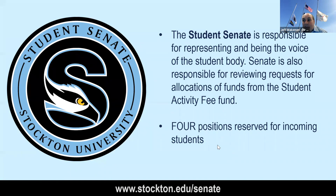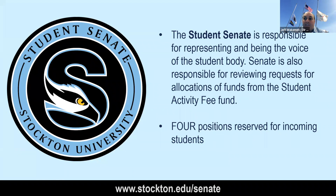Student Senate is funded through the student activities fee, which every student pays into the pot, and it gets doled out to all of the organizations for their events. If you had maybe a few thousand dollars in your high school student government, they have about $880,000 that they use every year to fund all 180 organizations — including homecoming, Hispanic heritage month, women's history month, black history month, the food pantry for students, and many other things. There are always four positions reserved for incoming students — both freshmen and transfer — so when you arrive, you will be able to get right on board with Student Senate.